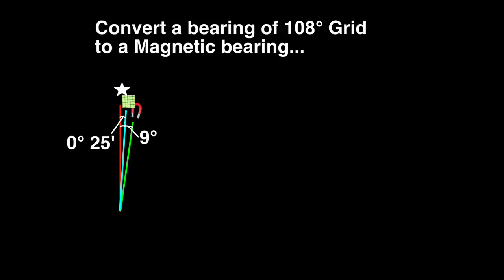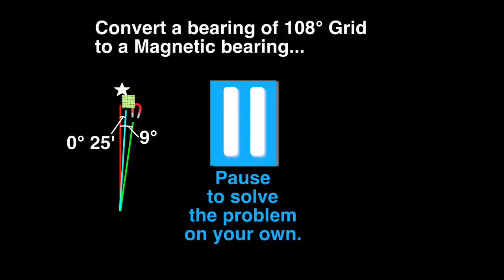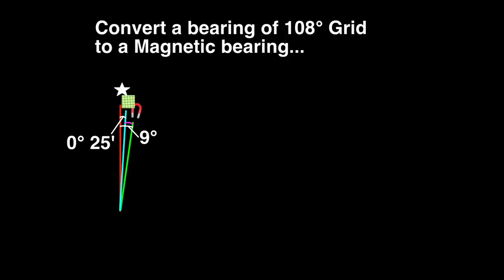Problem 3. Convert a bearing of 108 degrees grid to a magnetic bearing. Magnetic north is 9 degrees east of true north. Grid north is 25 minutes east of true north. The angle between grid north and magnetic north is the 9 degrees from magnetic to true, less the 25 minutes from true to grid. That would be 8 degrees 35 minutes, which will round up to 9 degrees.